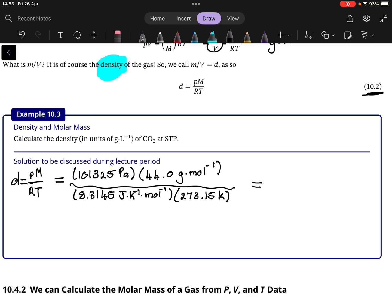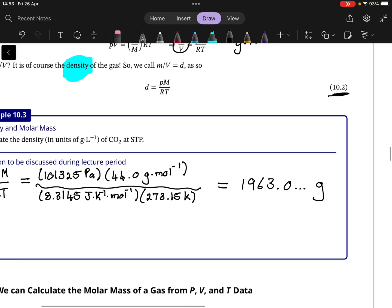Which you will get a value of 1963.0 and some numbers gram per mole. The moles cancel, but what is the unit of volume when you're working in standard tempo with SI units is of course per cubic meter, it's not per liter.